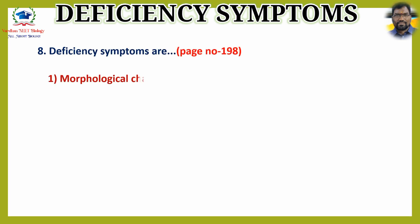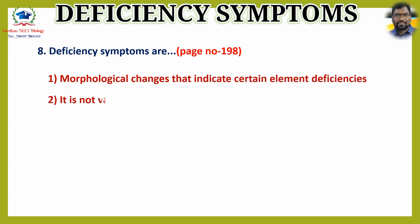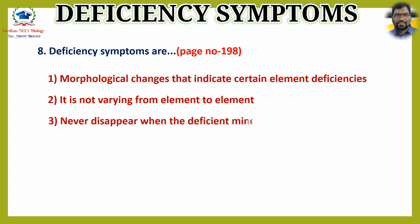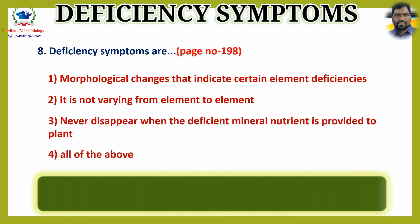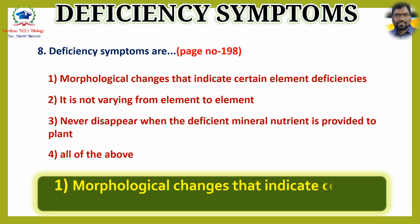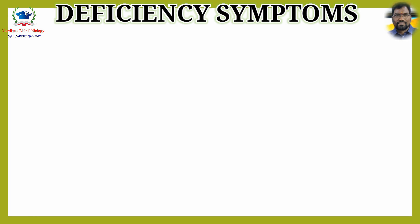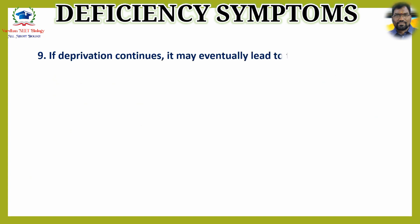Question 8: Deficiency symptoms are — option 1: morphological changes that indicate certain element deficiencies; option 2: it is not varying from element to element; option 3: never disappear when the deficient mineral nutrient is provided to plant; option 4: all of the above. The answer is option 1: morphological changes that indicate certain element deficiencies.